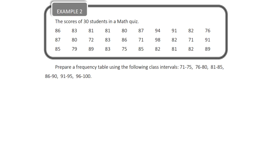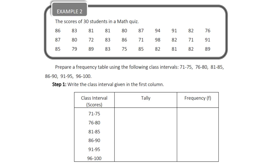Here is example number 2. We have here the scores of 30 students in a math quiz — 86, 83, and so on. There are 30 scores since there are 30 students. The class intervals are already given: 71 to 75, 76 to 80, 81 to 85, 86 to 90, 91 to 95, and 96 to 100. So we are done with column 1 and just have to tally the scores.